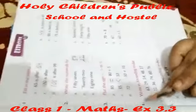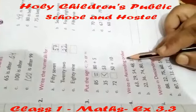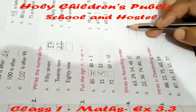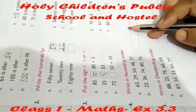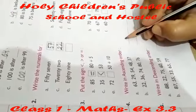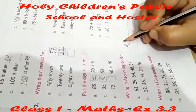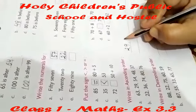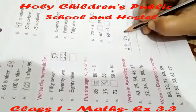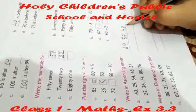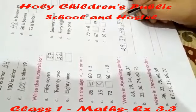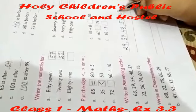Question number 4 is write in ascending order. In ascending order we arrange numbers from smaller to bigger. First we compare the numbers and write the smallest digit first: 29, then 37, then 48, then 54, and at last the biggest one, 63.